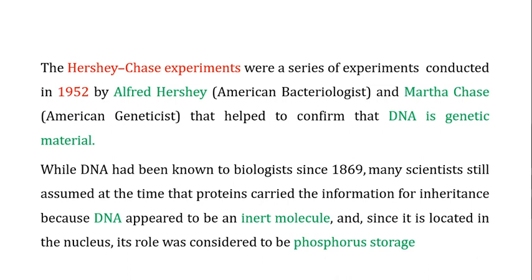While DNA had been known to biologists since 1869, many scientists still assumed at that time that protein carried the information for inheritance, because DNA appeared to be an inert molecule. Since it is located in the nucleus, its role was considered to be the storage of phosphorus.